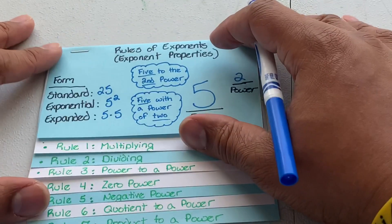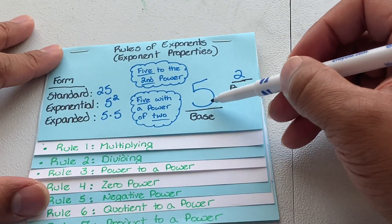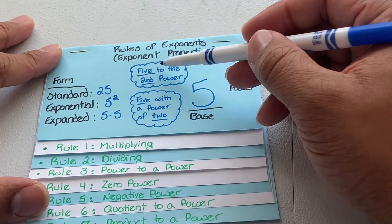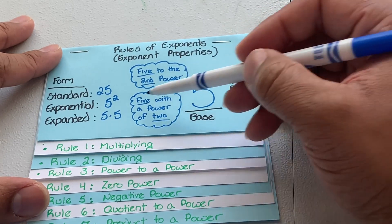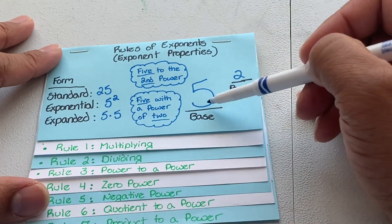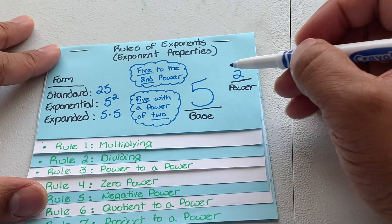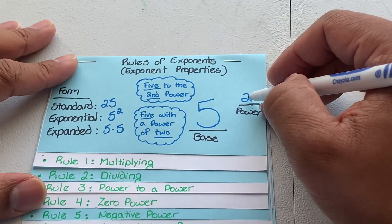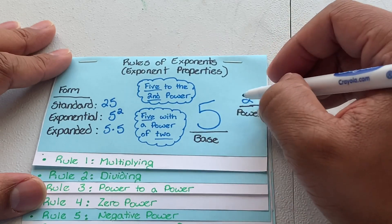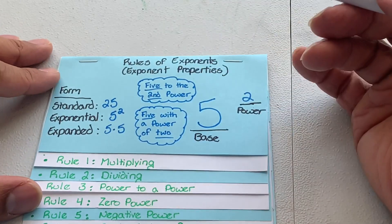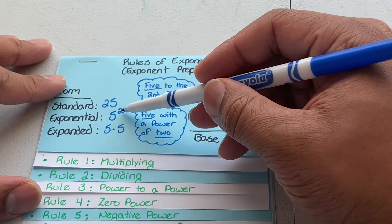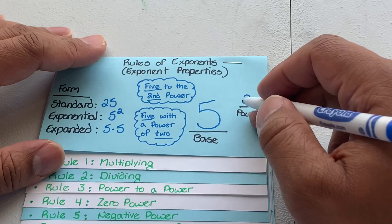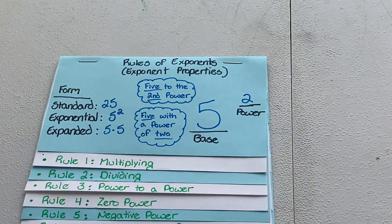Let's put some detail at the top. We'll take the base of five and a power of two. This is the way you write in exponential form — five to the second power. This is basically saying you take this five and multiply it by itself two times: five times five. The standard form of that is twenty-five. The exponential form is five to the second power, meaning multiply five by itself two times. Copy that.